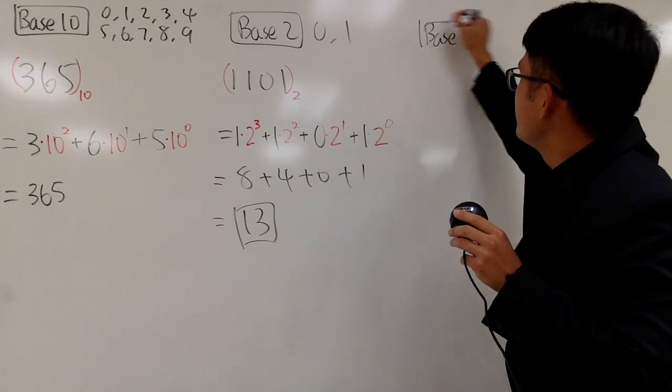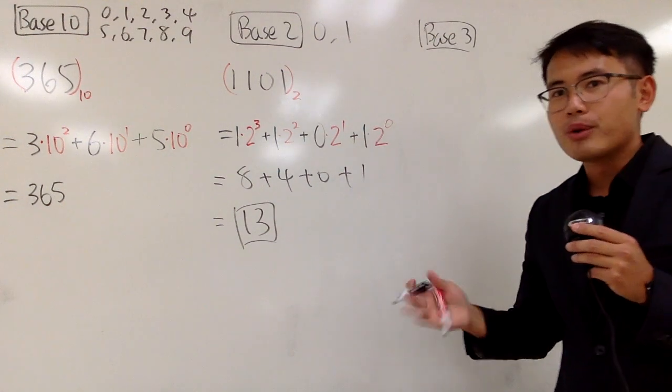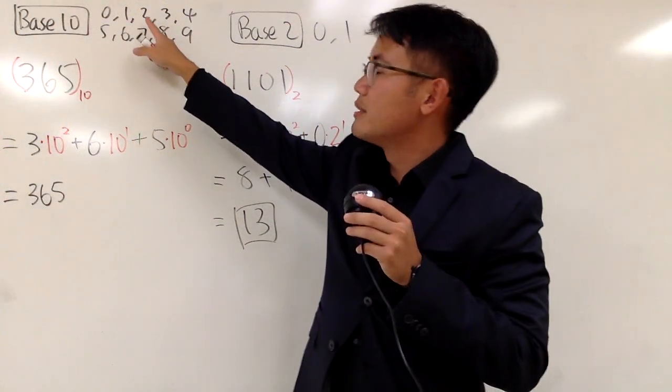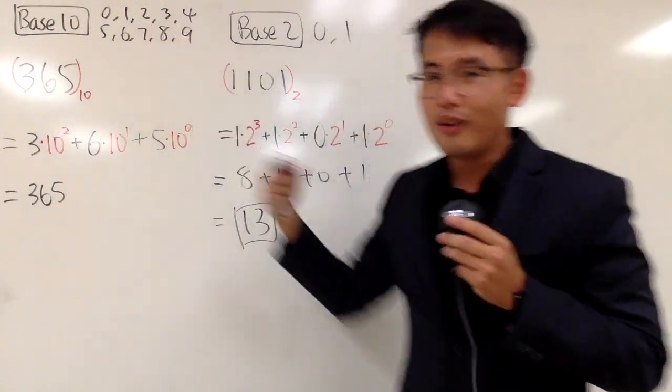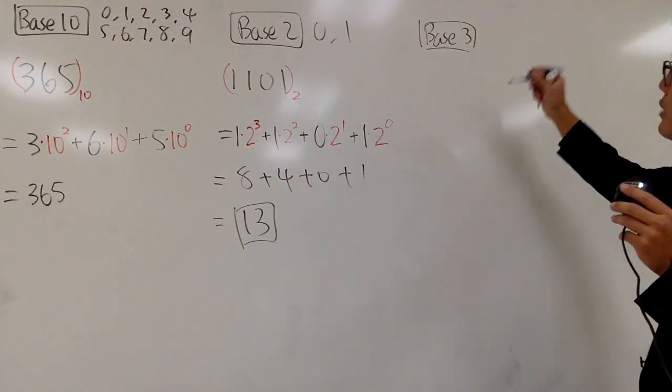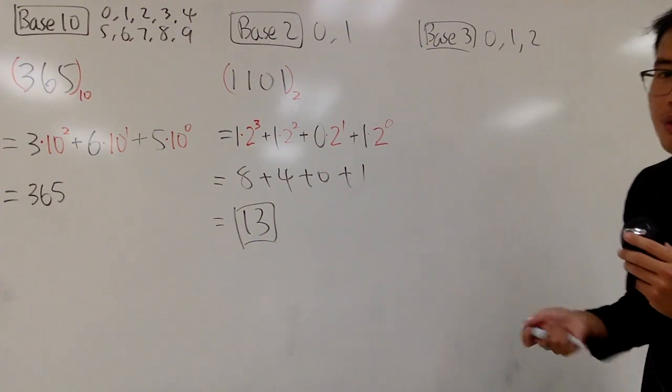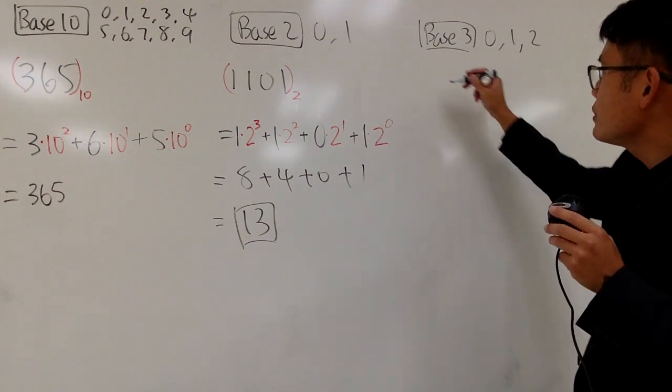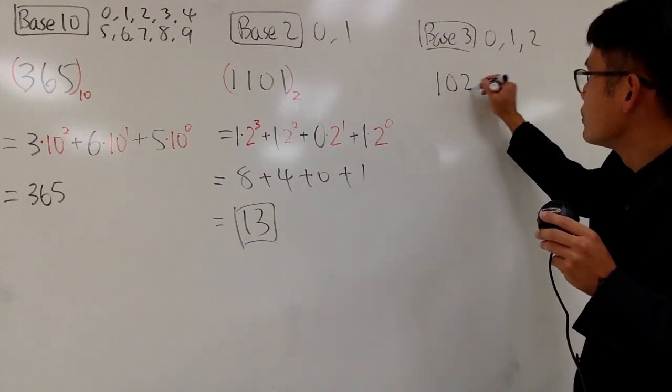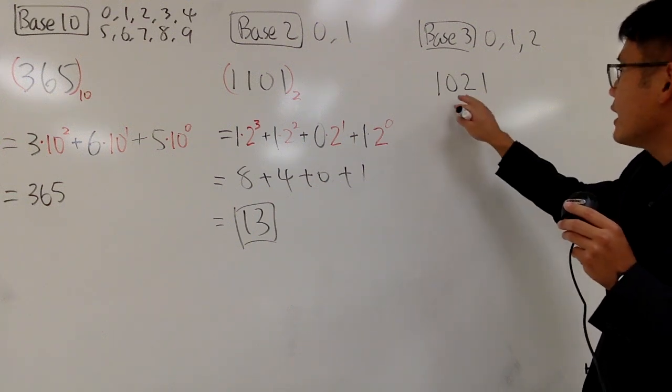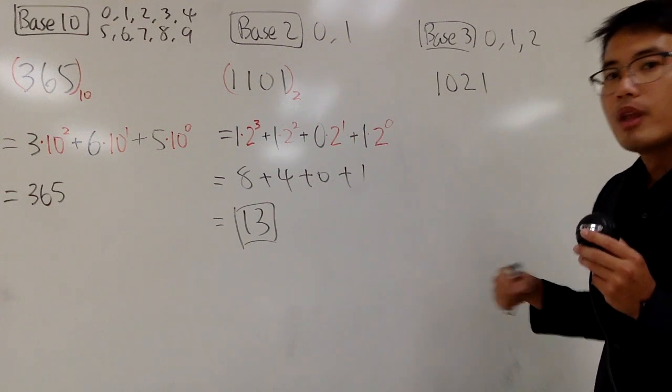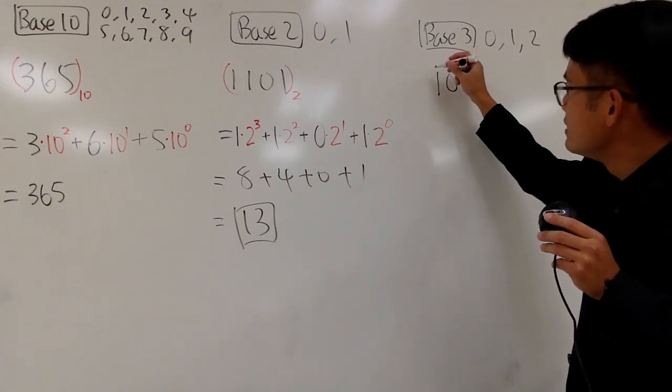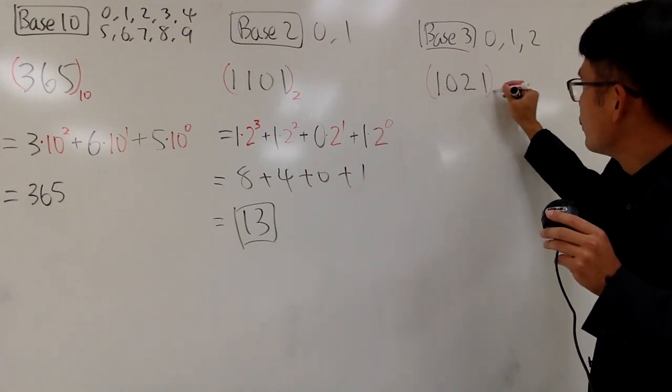And for base 3, I have one more digit to use. So let me just use the next one, of course, 2. So in the base 3 world, I have 0, 1, and 2 to be used. Let me just give you guys a quick example. Suppose I have 1, 0, 2, 1, like this. You see, I can use 0, 1, or 2 to write my number in base 3. And I will emphasize this is base 3, so I'll put parentheses with a little 3 right here.